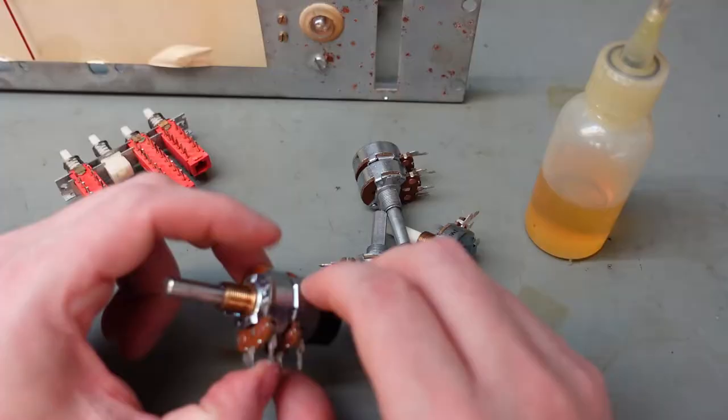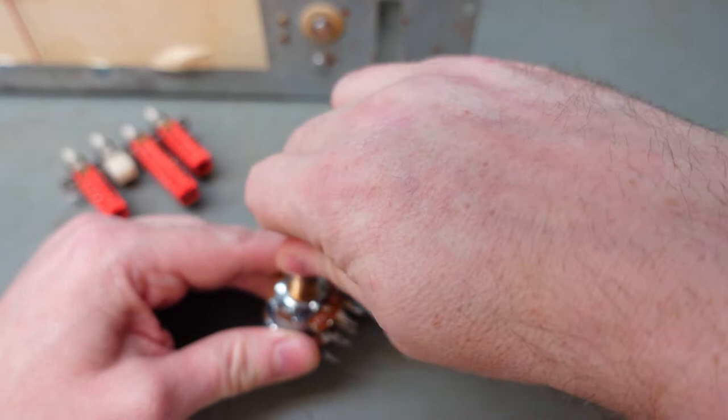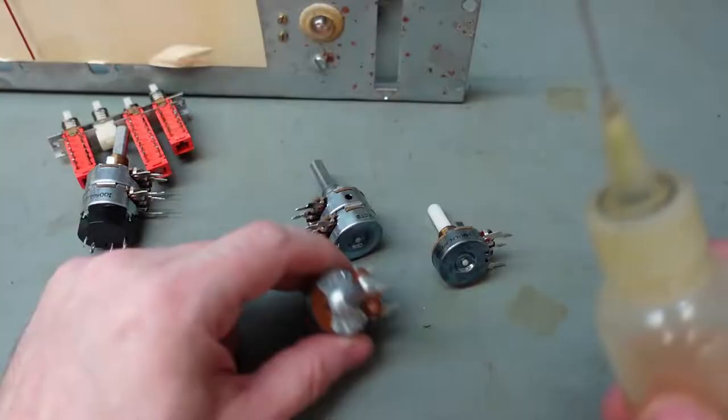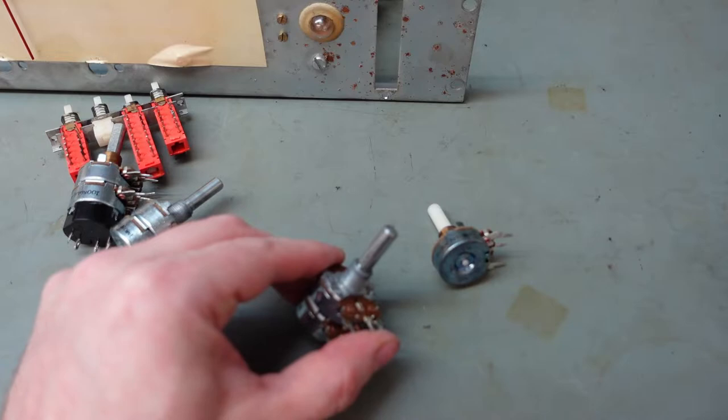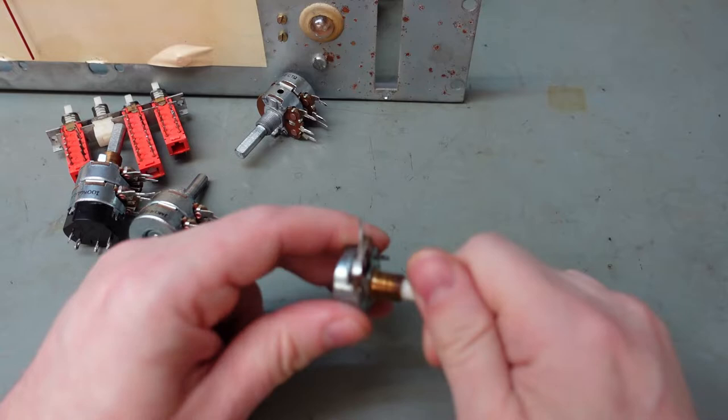I'm just going to give these pot shafts a little bit of lube as well, just a little bead in there and just whiz it round a bit. The plastic one doesn't really need any lube. Nylon being sort of self-lubricating, so I'll leave that one alone.